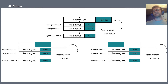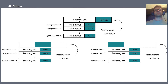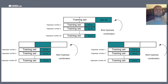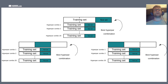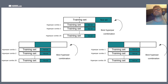They'll tweak and change those hyperparameters, train on the training set, evaluate on the validation set, and keep doing that until they feel they have a combination of hyperparameters that gives the best performance on the validation set. Once they have that, they evaluate the model on the test set, which has not been seen by the algorithm at any point during training and tuning, and use that as a final metric for expected performance on new data.